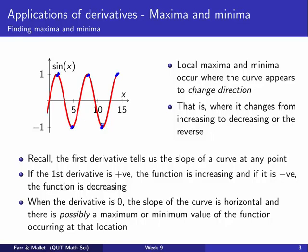Remember that the first derivative is the thing that tells us about the slope of a curve at any point. So if the first derivative is positive, then the function is increasing — something like these points here. If it's negative, the function is decreasing. So when the derivative is zero, the slope of the curve is horizontal, like these places here.